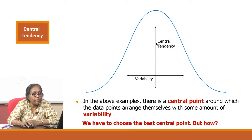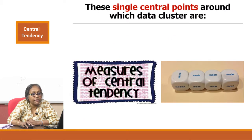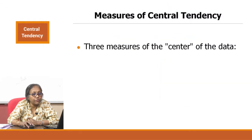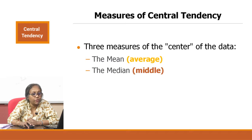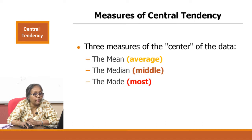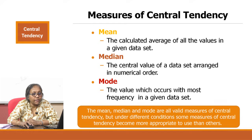Whenever there is a central point, there will also be a certain amount of variability around that central point. These two concepts must be held together when understanding quality controls. The single central points around which data cluster can be the mean, median, or mode — these are the three measures of central tendency. The mean is the average, the median is the middle value, and the mode is the most commonly occurring value.